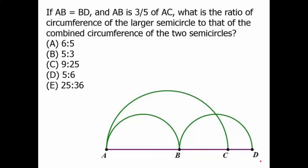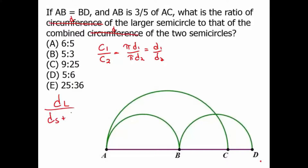We want the ratio of two circumferences. If we write circumference one over circumference two, and circumference equals pi times diameter, the pi's cancel and we just get a ratio of the diameters. A ratio of circumferences equals a ratio of diameters. So we just need to compare the diameter of the larger circle to the combined diameters of the two smaller semicircles.